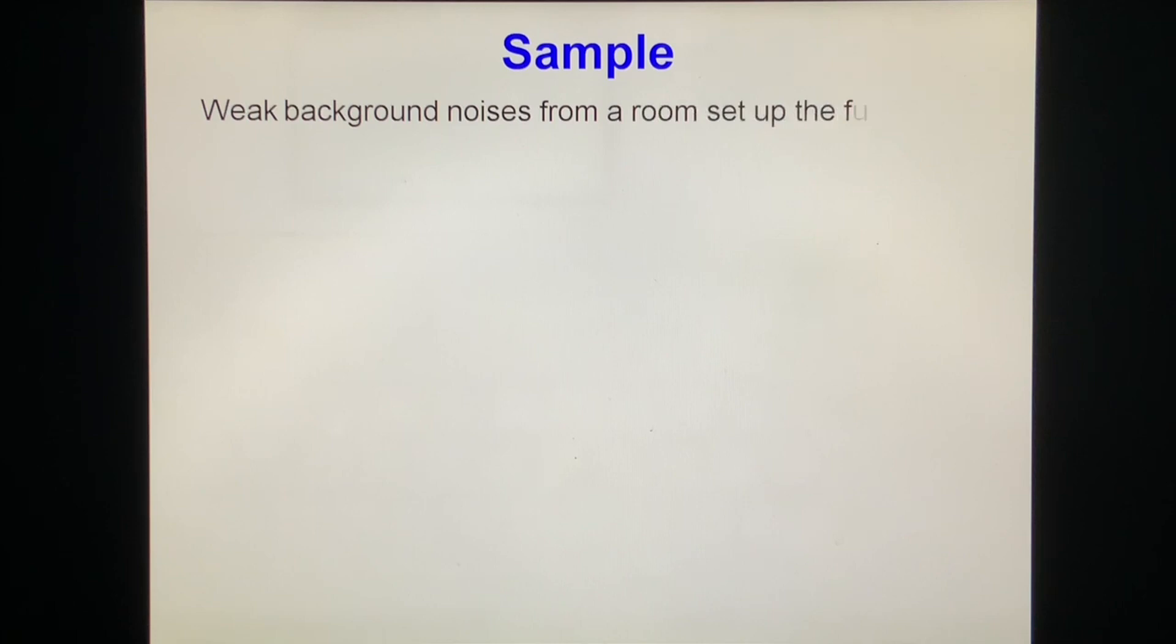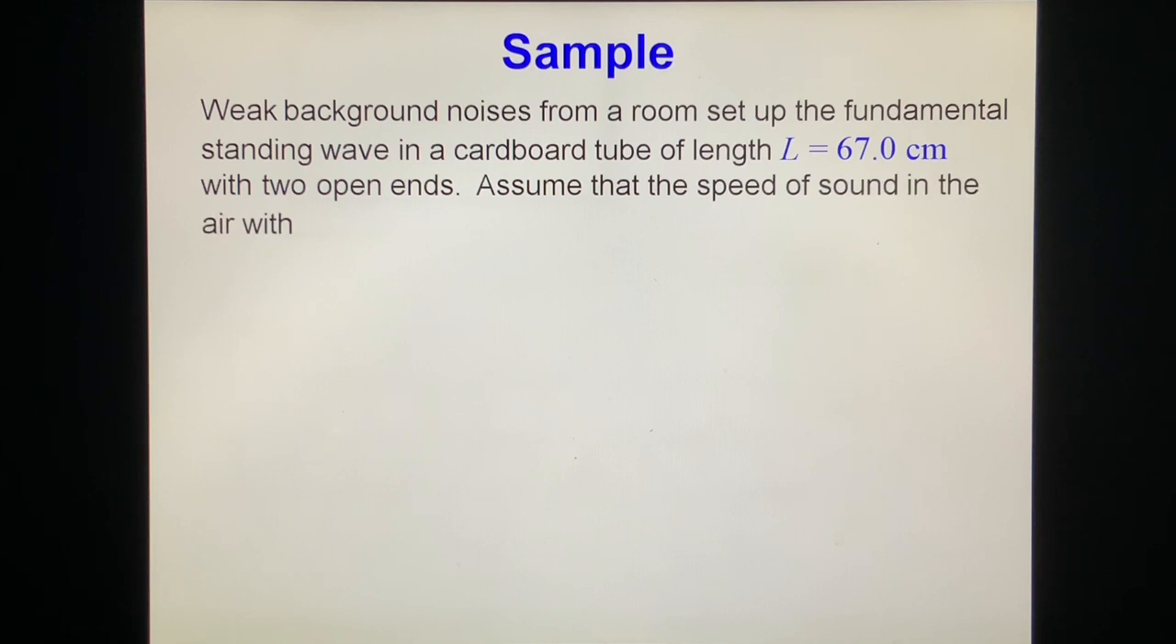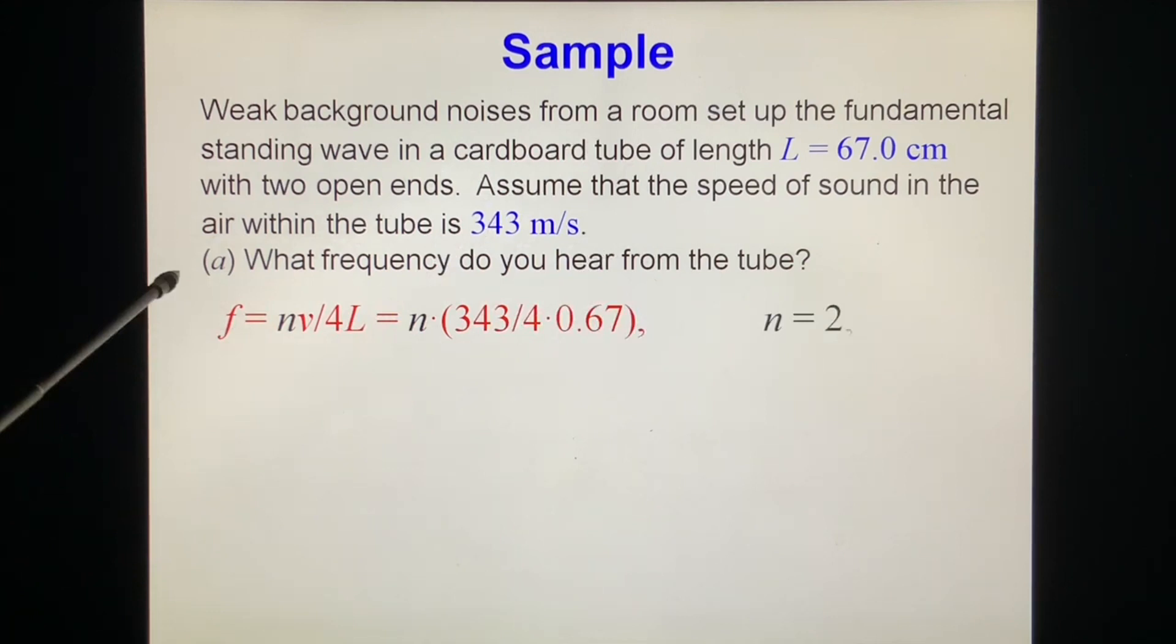Sample. Weak background noises from the room set up the fundamental standing wave in a cardboard tube of length 67.0 centimeter with two open ends. Assume that the speed of sound in the air within the tube is 343 meter per second. Question: What frequency do you hear from the tube? You know this is both ends open so we use, this one should be even number, 2, 4, 6, 8. And we have everything, with V. We have L. You put it in. The lowest is fundamental, 256 Hz.